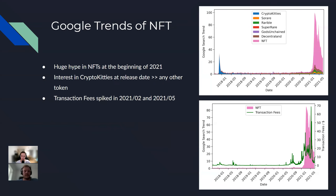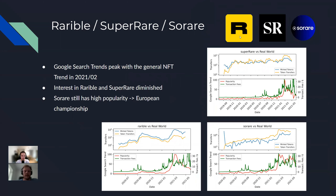Looking at the transaction fees, we can see that at the same time as the NFT hype in February 2021, there is also a spike in transaction fees. For Rarible, SuperRare, and SoRare, transactions for all three NFTs increased over time. But after the initial hype, the interest in the Google search trend diminished for SuperRare and Rarible, whereas for SoRare it kept quite high, which might be due to the European Championships taking place at the moment.